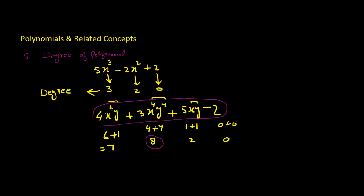If you look at this carelessly, you might think the degree is 6 because 6 appears to be the largest single exponent. But actually it is not. When there are two variables, you must add the exponents of both variables in all terms and then find the maximum. That is how you find the degree of a multivariate polynomial.